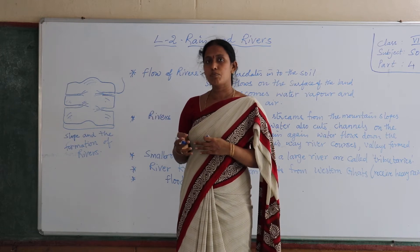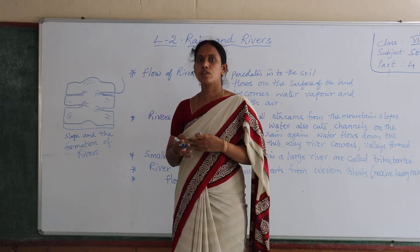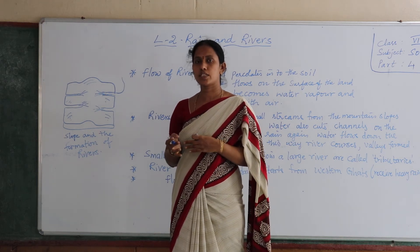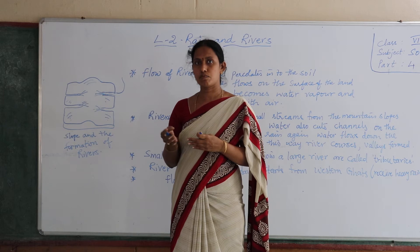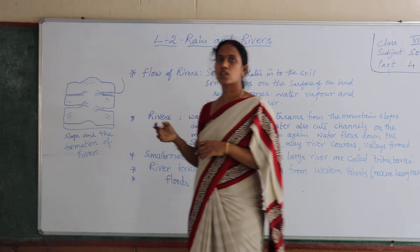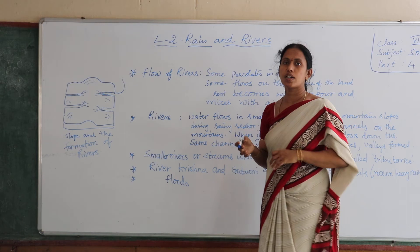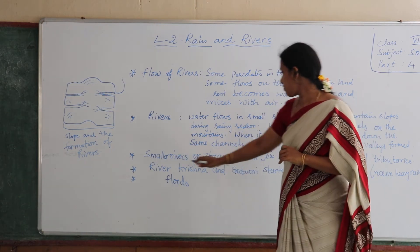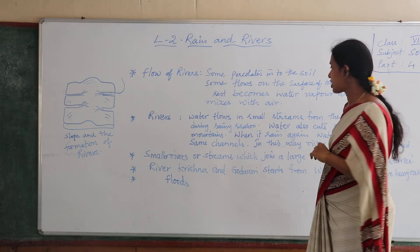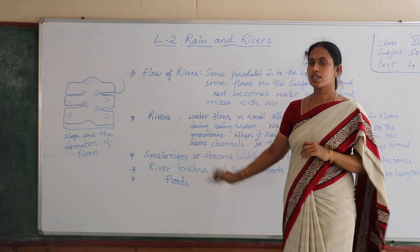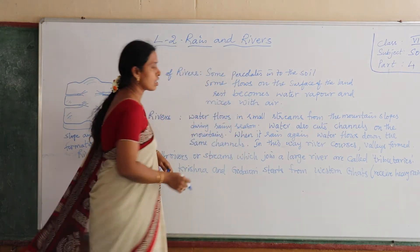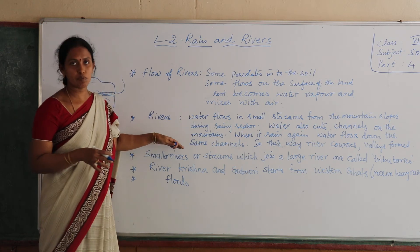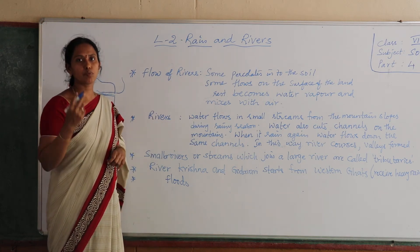When the river becomes bigger and broader, the flow of water will be slow. Then the water takes salt and sand and deposits it on the banks of the river. These small rivers or streams which join a large river are called tributaries.